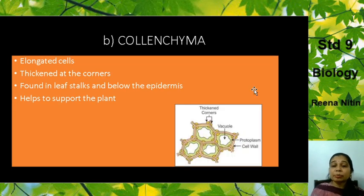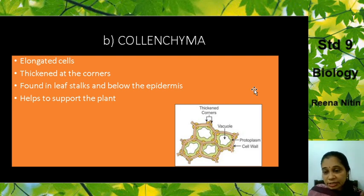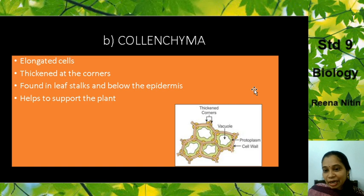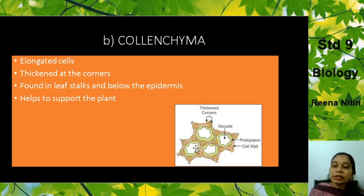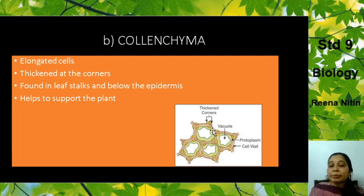Now we come to the second type of supporting tissue — Collenchyma. This is different from Chlorenchyma. What is Collenchyma? You can see they are elongated cells and thickened at the corners. Where are they found? In the leaf stalks and below the epidermis — in little thicker parts. What do they do? They help in supporting the plant, and that is why they have these thickenings at the corners.